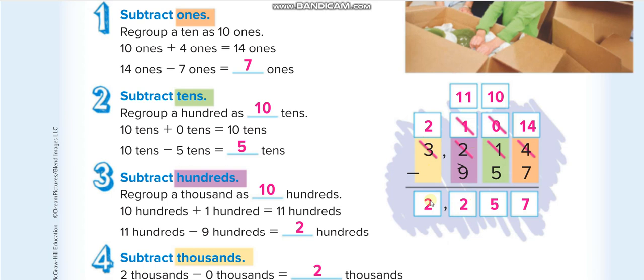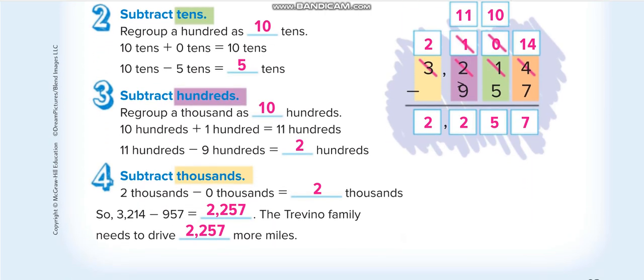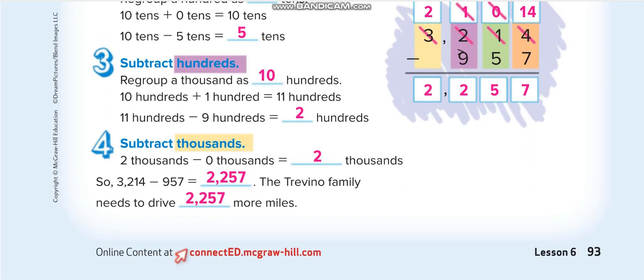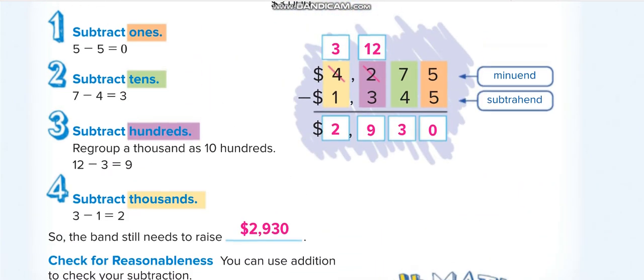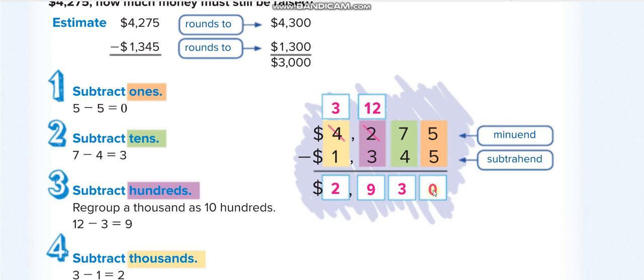They're writing each step here so you can copy it. Next page now. Again, we are subtracting. Five minus five, zero. Seven minus four, three. Two minus three, not possible, three is a big number.